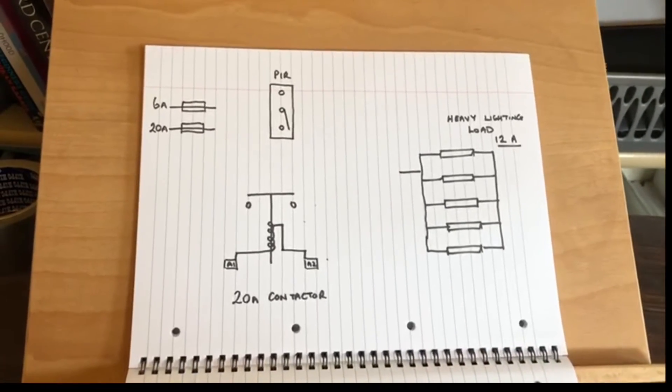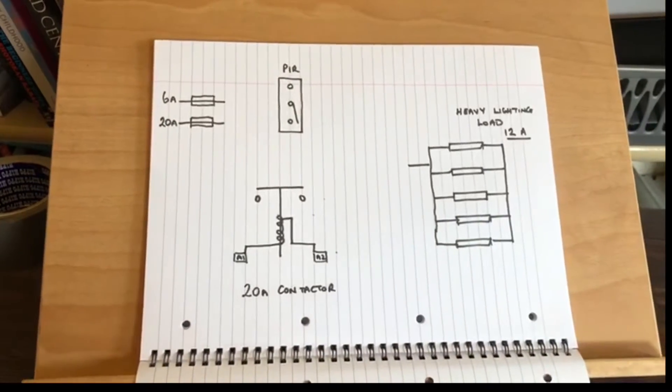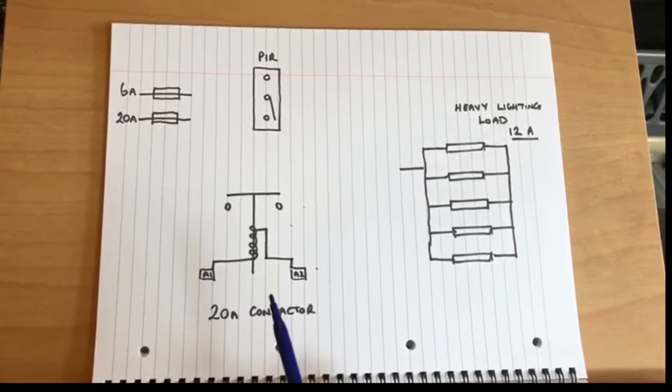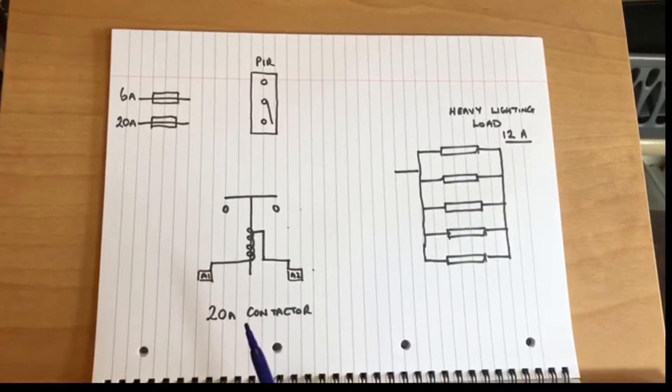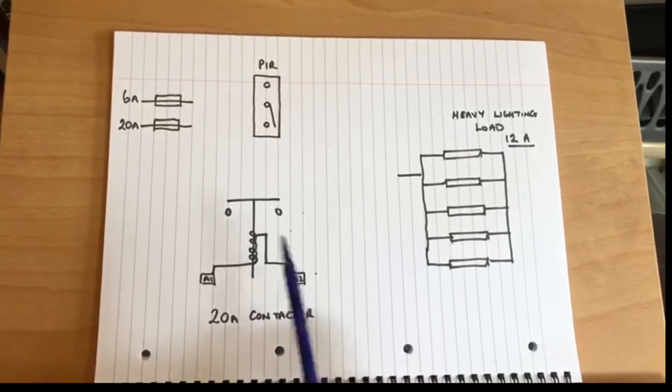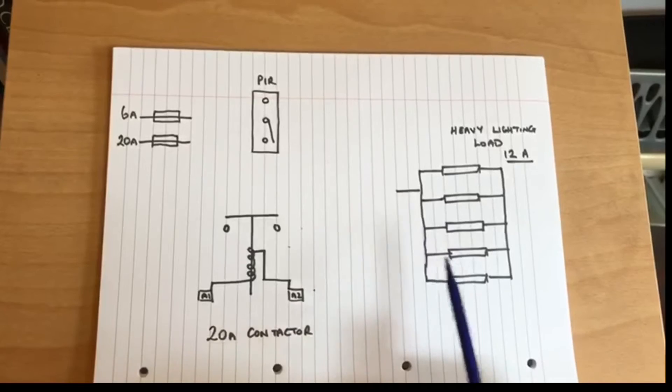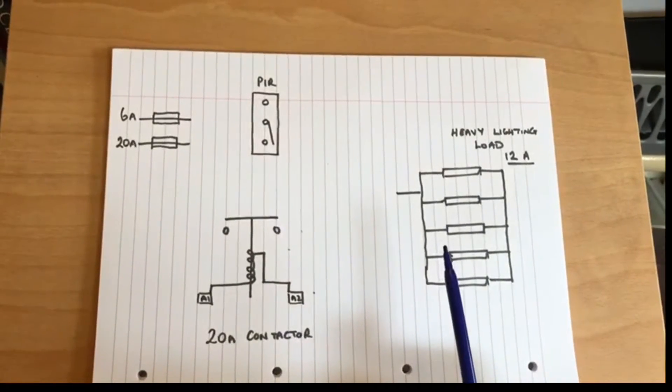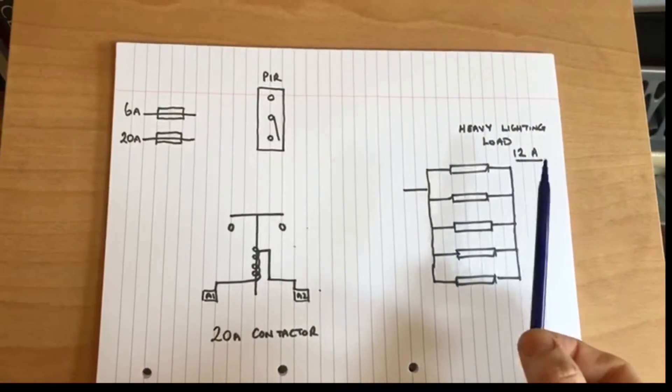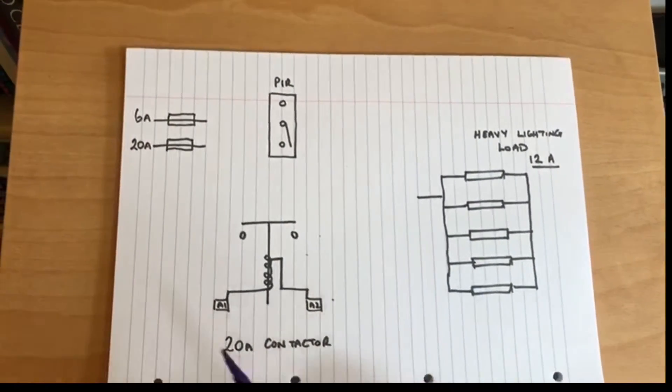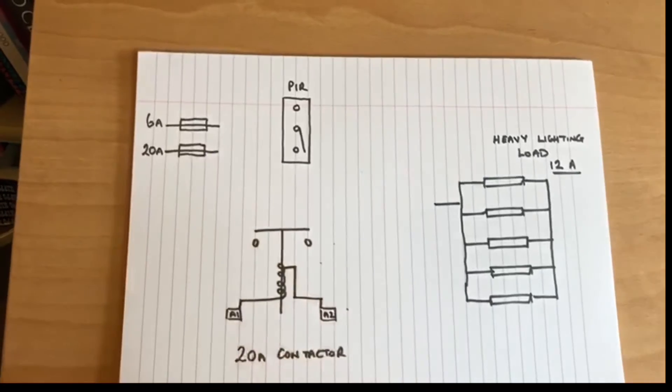So following on from the previous video, we've still got our contactor, although we've called it a 20 amp contactor. Still the same configuration as previous, we have a much heavier lighting load, so I've just said it's 12 amps. This could be a bank of fluorescent lights or something, and this time we also have two circuit breakers.